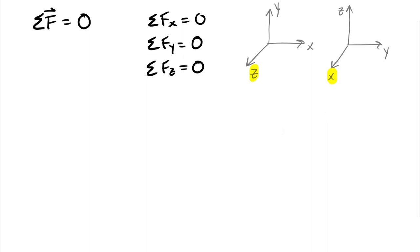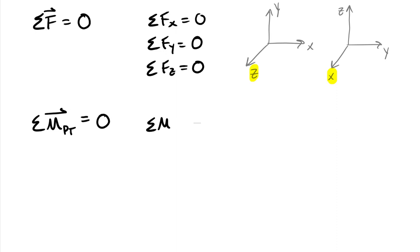Getting into summing moments, we're going to sum moments about those same three axes. With equilibrium, just like in two-dimensional equilibrium, we can sum moments about any point we want. There's a lot of strategy that could go into that. An equivalent set of three equations would be to sum the moment about the x-axis equals zero, sum the moment about the y-axis equals zero, and sum the moment about the z-axis equals zero.